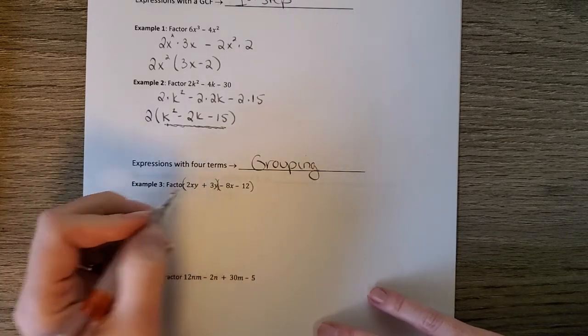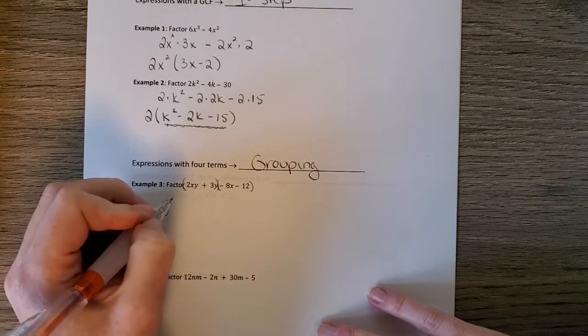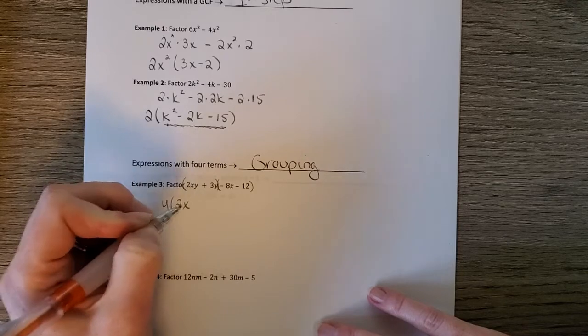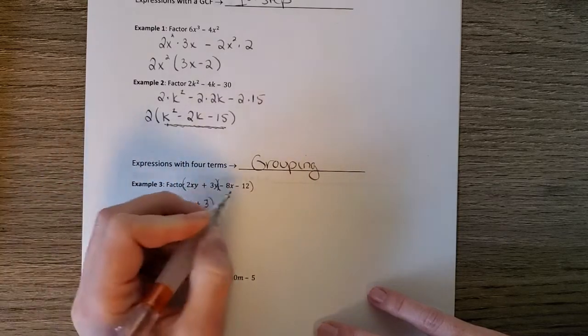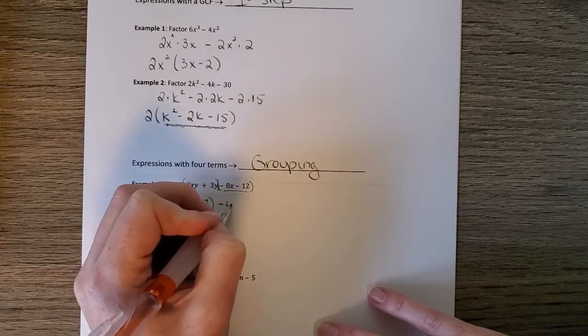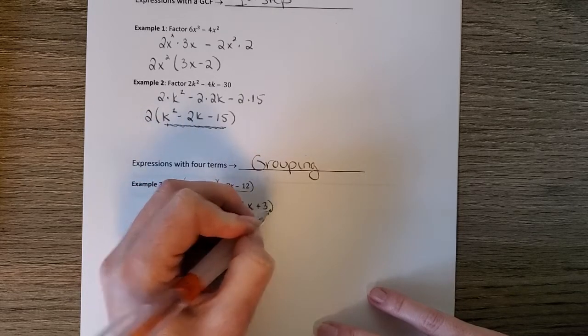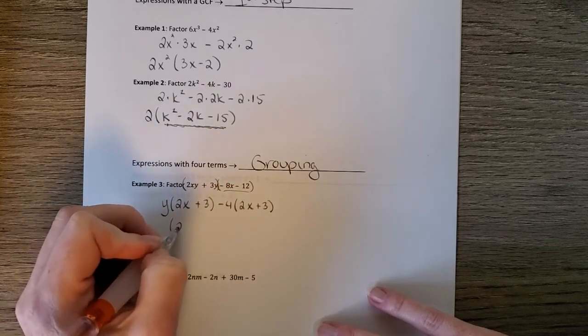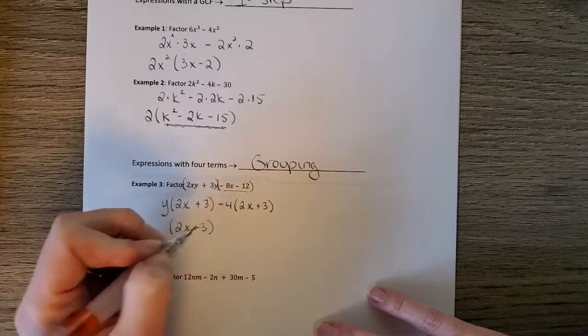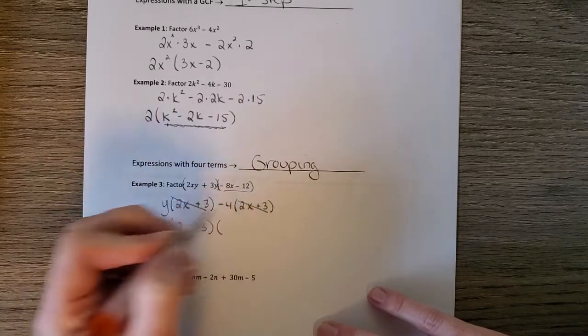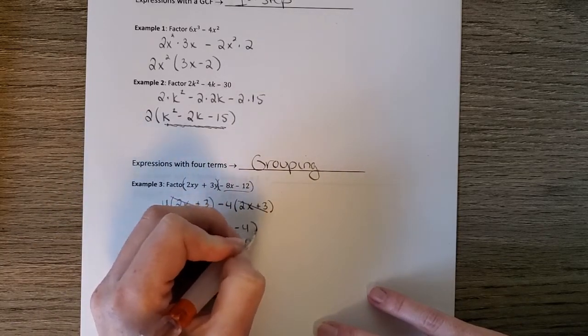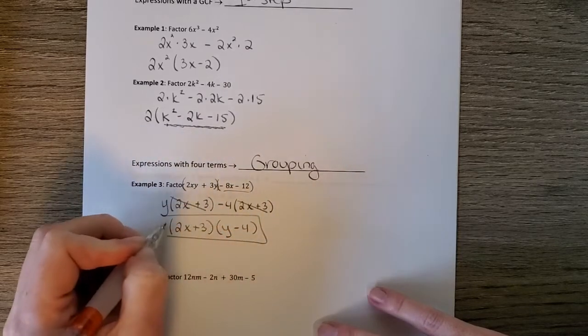So the GCF of the first two is just y, and if we factor the y out, we get 2x plus 3. The GCF of the second group would be negative 4, and that would give me 2x plus 3. And then the GCF of that set would be 2x plus 3. Cancel those away, and we get y minus 4. So factoring by grouping.